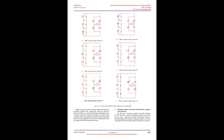In diode clamped MLI, a diode transfers a limited amount of voltage, thereby reducing the stress on other electrical devices. The maximum output voltage is half of the input DC voltage. The diode clamped multilevel inverter was also called the neutral point clamped (NPC) inverter. The flying capacitor topology, first introduced by Maynard, has redundancies in inner voltage levels; in other words, two or more valid switch combinations can produce the desired output voltage waveform.